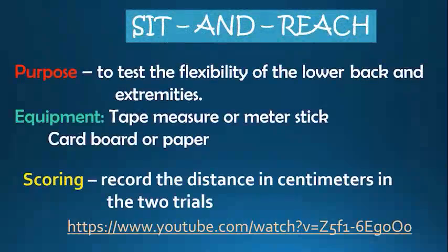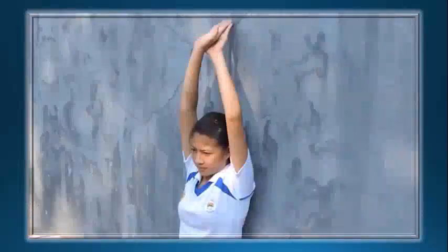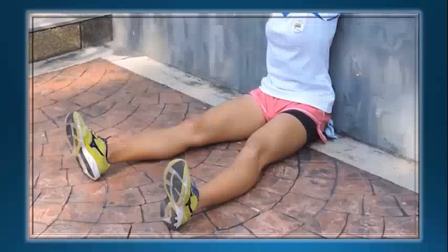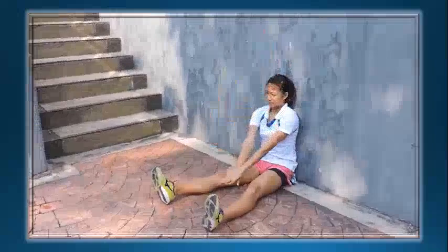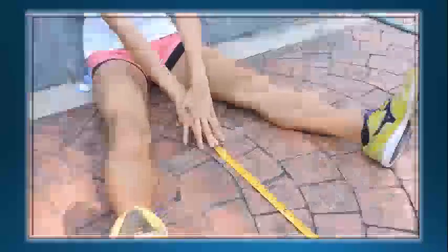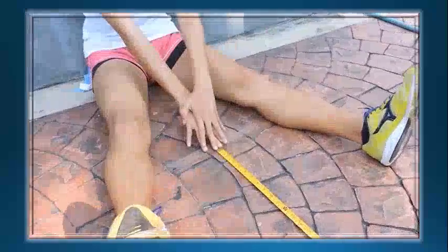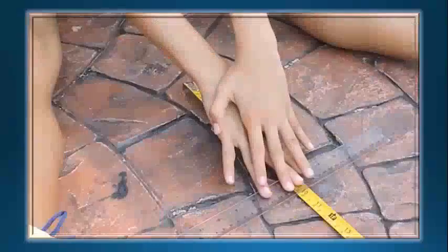Another activity to measure flexibility is the sit and reach. Record the distance in centimeters of two trials. For the performer: sit on the floor with back, head, and shoulders flat on the wall. Feet are 12 inches apart. Interlock thumbs and position the tips of the fingers on the floor without bending the elbows. Place the hands on top of the cardboard where the tips of the middle fingers are at the top edge. Push the cardboard slowly and try to reach the farthest distance possible without bending the knees. Bouncing or jerking movement is not allowed. Do it twice.